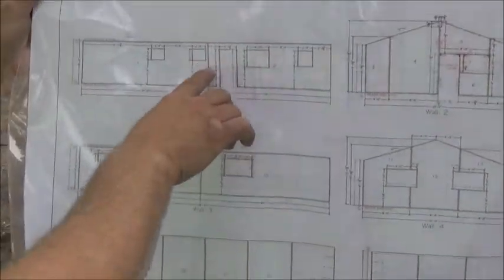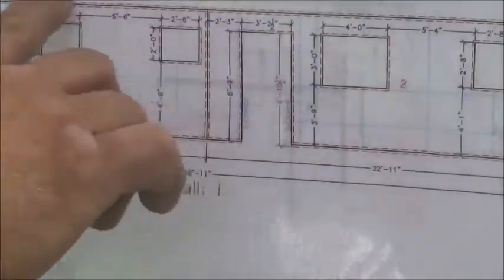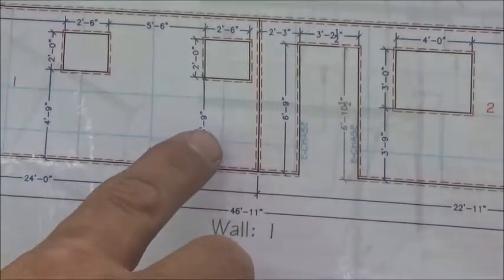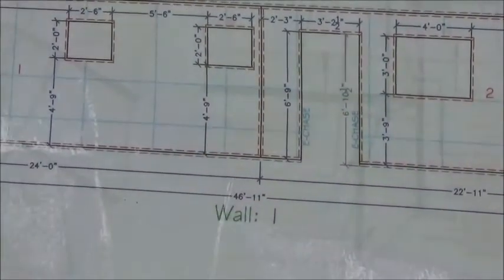When you see a dotted line like this, it means an inch and a half setback. When you see this right here, it's what we call a spline connection. That's our box spline, and we'll get to that later.